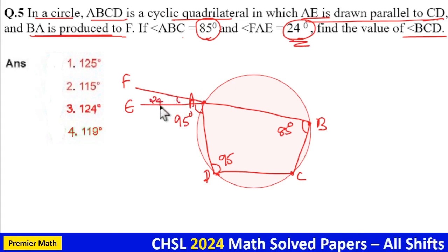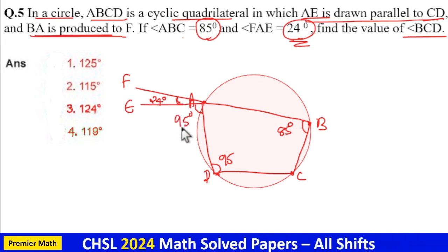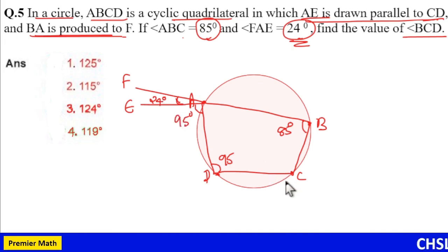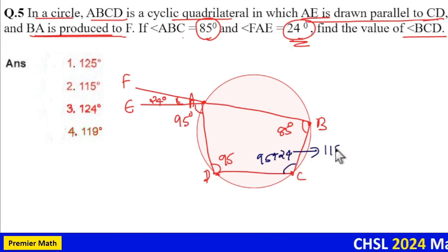This is 24 degrees, which means if these two angles are 95 and 24, then this angle is equal to 95 plus 24, that is 119 degrees.